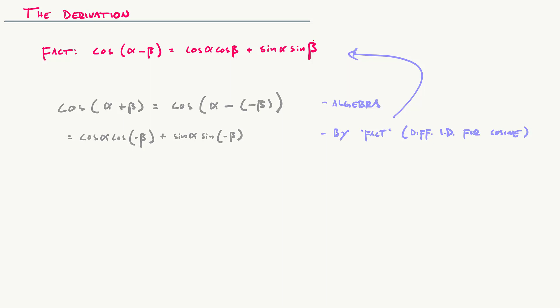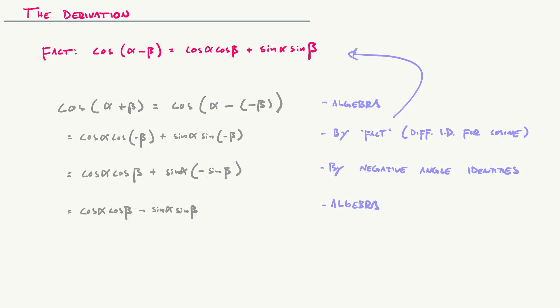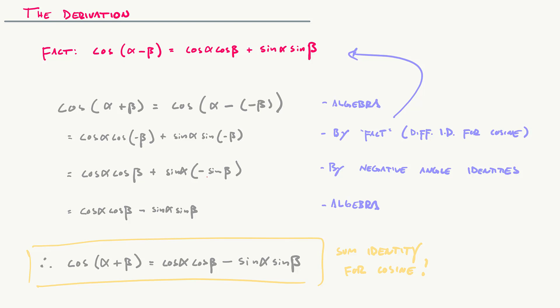Sine of a negative angle uses the odd function property, so you bring out a negative: sine(negative beta) equals negative sine beta. We get cosine alpha cosine beta plus sine alpha times (negative sine beta), which means you're subtracting the second part. That is the sum identity for cosine: cosine(alpha + beta) = cosine alpha cosine beta minus sine alpha sine beta.